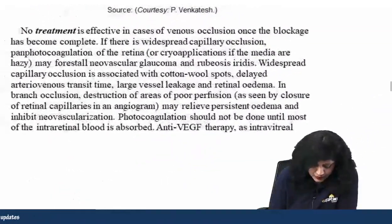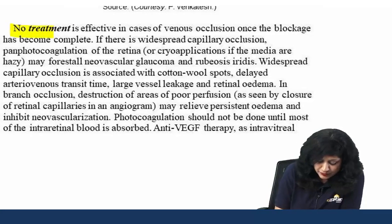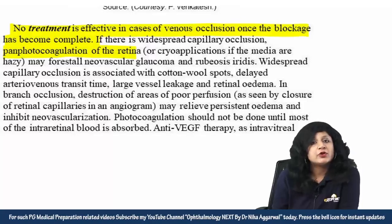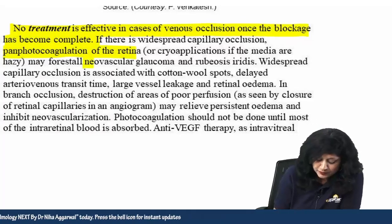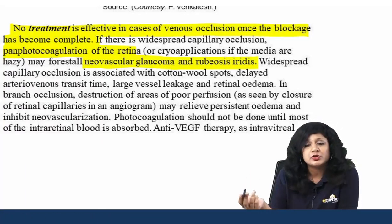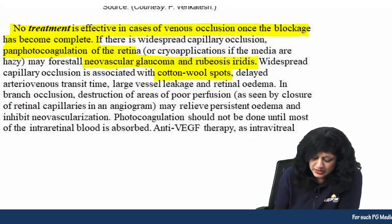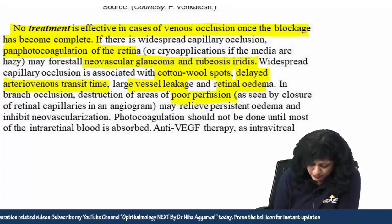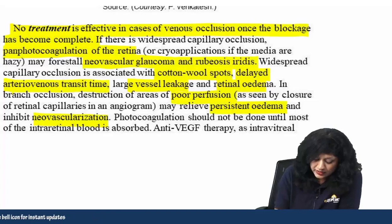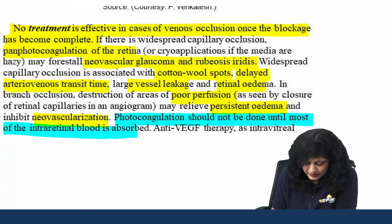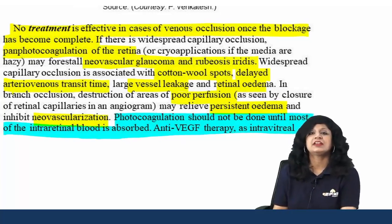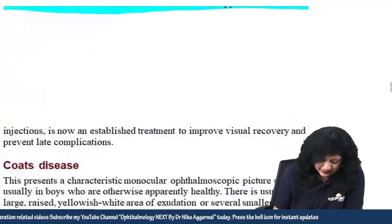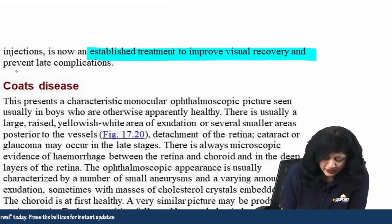Regarding treatment: no treatment is effective once the venous occlusion blockage is complete. If there is widespread capillary occlusion, pan-photocoagulation can be done — not for vision but to prevent complications like neovascular glaucoma and rubeosis iridis. Widespread capillary occlusion is associated with cotton-wool spots, delayed AV transit time, large vessel leakage, and retinal edema. In branch occlusion, destruction of areas of poor perfusion may relieve persistent edema and inhibit neovascularization, but photocoagulation should not be done until most intra-retinal blood is absorbed. Anti-VEGF therapy via intravitreal injection is an established treatment to improve visual recovery and prevent late complications.